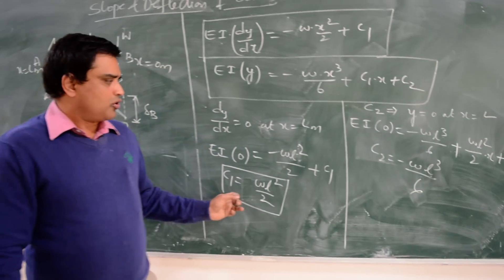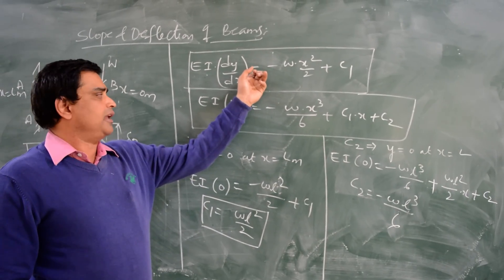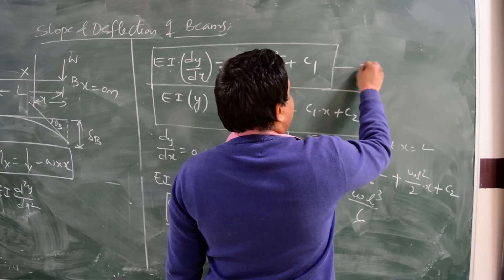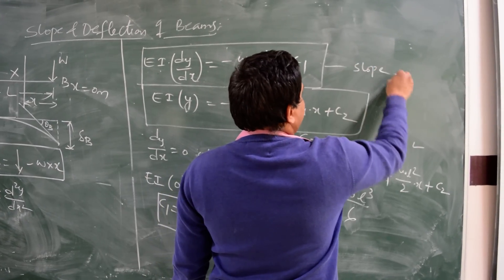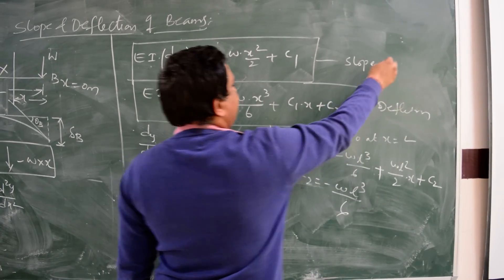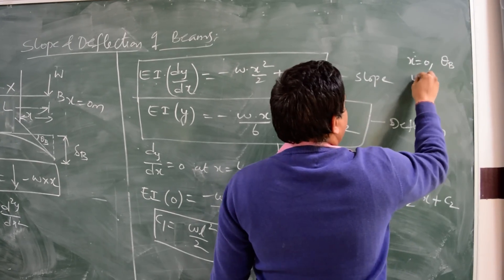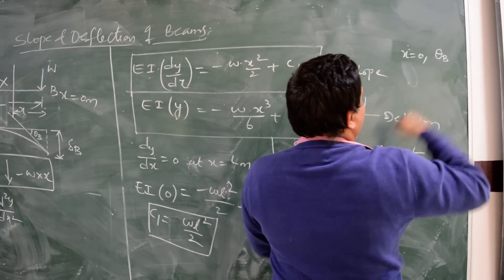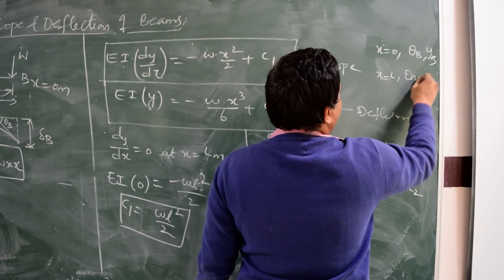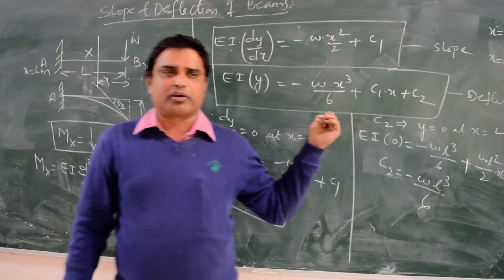We have now calculated the first and second integration constants. Substituting C1 and C2 into the slope equation EI dy/dx gives the slope expression, and substituting into EI times y gives the deflection expression. When x equals 0, we get the slope and deflection at the free end B. Thank you. This completes using the double integration method to calculate slope and deflection for a cantilever beam.